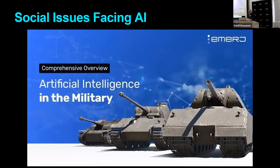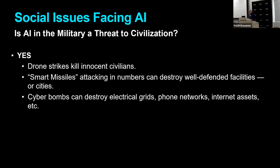Another issue is the use of AI in our military. Some people say that AI is a threat to all of civilization when used by the military. They argue that drone strikes kill innocent civilians, and smart missiles attacking in numbers can easily destroy a well-defended facility or an entire city — even with heavy missile losses, since no pilots lose their lives. Cyber bombs — digital attacks against computer infrastructure — can destroy electrical grids, destroy phone networks, and wipe out internet assets.